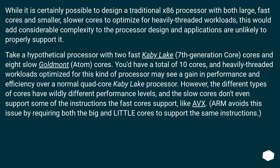While it is certainly possible to design a traditional x86 processor with both large fast cores and smaller slower cores to optimize for heavily threaded workloads, this would add considerable complexity to the processor design and applications are unlikely to properly support it. Take a hypothetical processor with 2 fast Kaby Lake (7th generation Core) cores and 8 slow Goldmont (Atom) cores. You'd have a total of 10 cores, and heavily threaded workloads optimized for this kind of processor may see a gain in performance and efficiency over a normal quad-core Kaby Lake processor. However, the different types of cores have wildly different performance levels, and the slow cores don't even support some of the instructions the fast cores support.